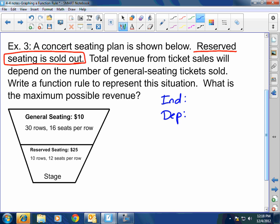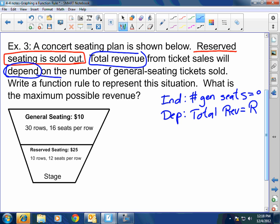No. The independent, guys, is the number of general seats. Guys, I think, read, doesn't this say total revenue depends on? So wouldn't total revenue be the dependent? So total revenue, I'm going to call R. General seats, I'm going to call little G. Does everyone see what I did there, gentlemen? So my total revenue R, pay attention, it's going to equal.